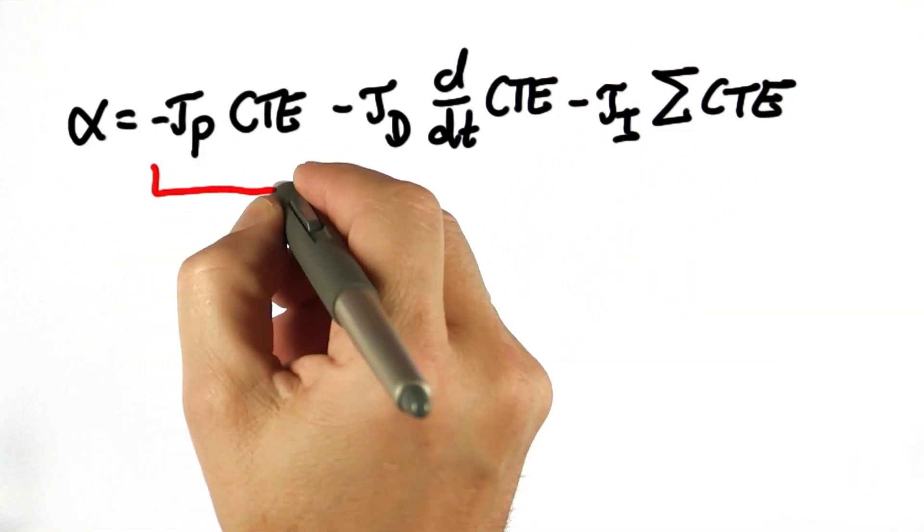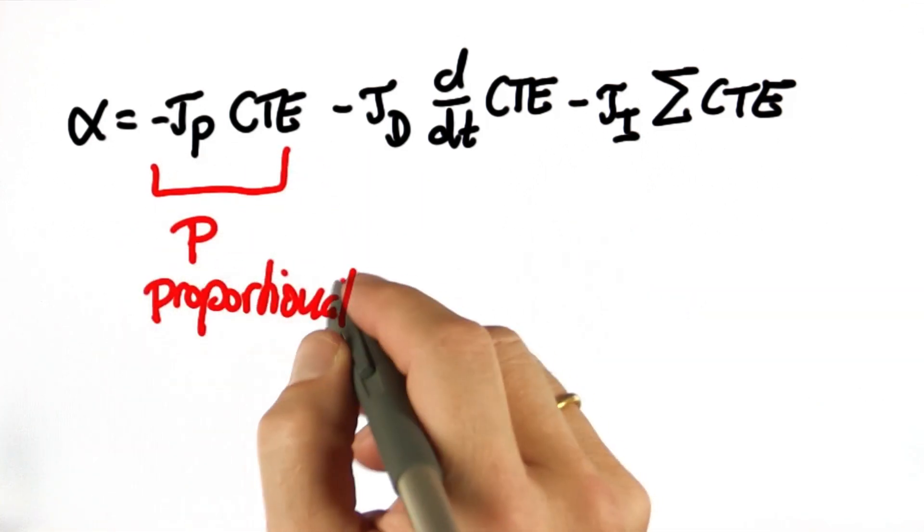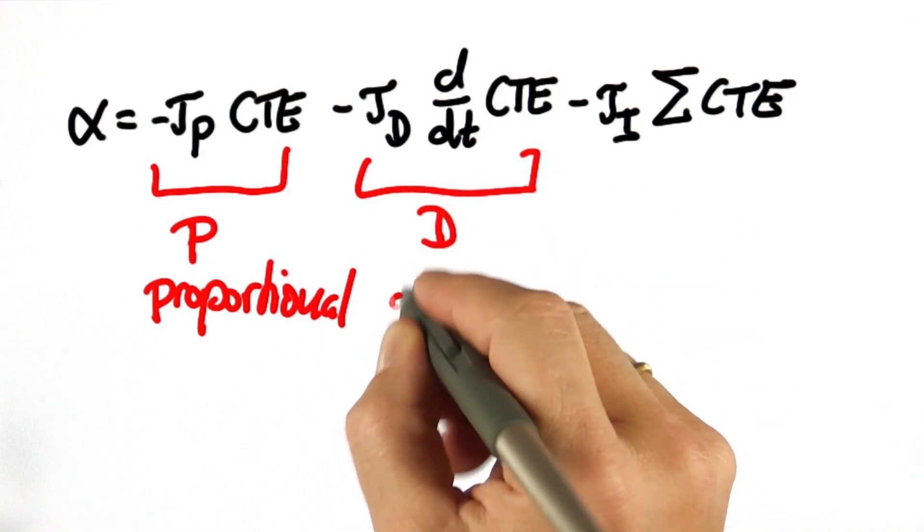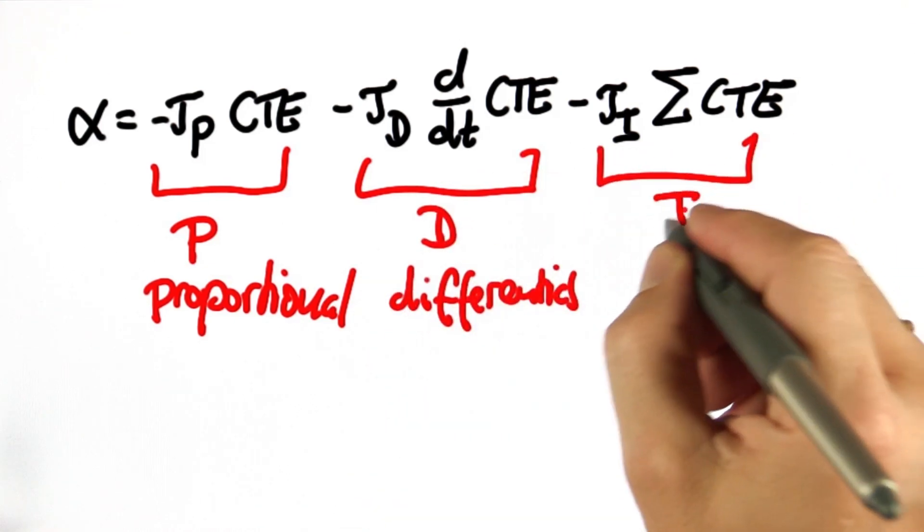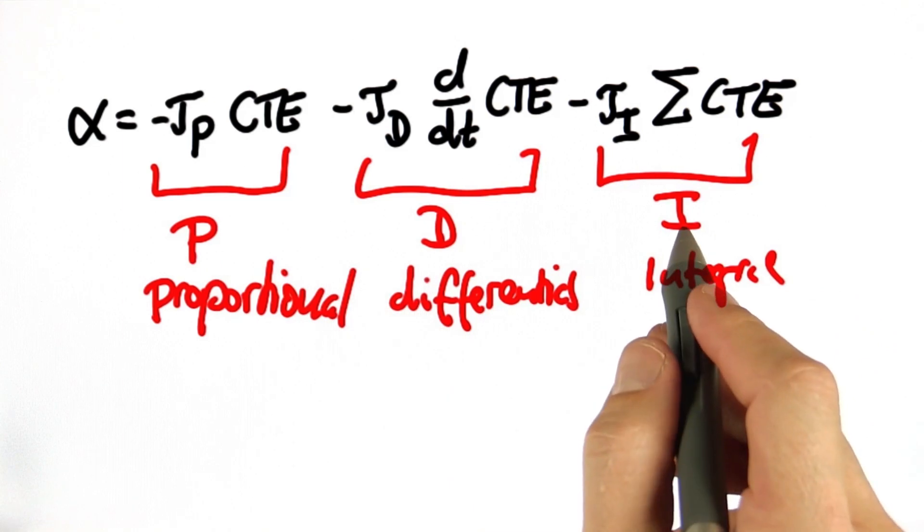This is called a PID controller. This is the P or proportional term, the D or differential term, and the I for integral. PID.